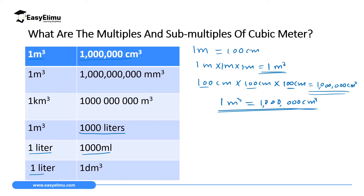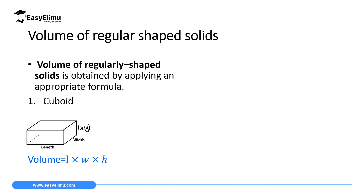Further conversions: one cubic meter equals one thousand liters, one liter equals one thousand milliliters, and one liter equals one cubic decimeter. For regular-shaped solids, volume is obtained using an appropriate formula.